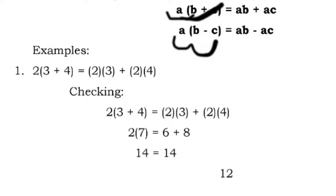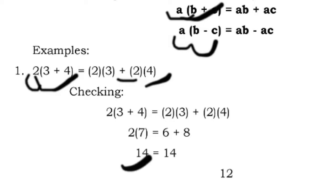For example, 2 times the quantity of 3 plus 4 equals 2 times 3 plus 2 times 4. Checking: the quantity of 3 plus 4 is 7, and 2 times 7 is 14. Then 2 times 3 is 6, and 2 times 4 is 8, so 6 plus 8 equals 14. They are equal.